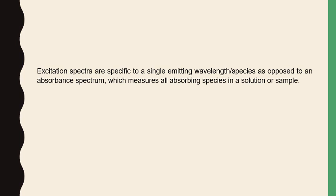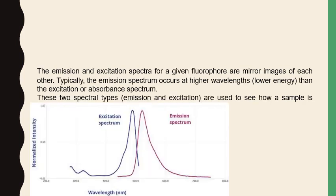There is one more difference between emission and absorption spectra. In excitation spectroscopy, the spectrum is specific to a single emission wavelength, as opposed to absorption spectroscopy in which all absorbing species in a solution or sample contribute. In absorption spectroscopy we have all wavelengths included. The emission and excitation spectra for a given fluorophore are mirror images of each other. Typically, the emission spectrum occurs at a higher wavelength than the excitation or absorption spectrum, and these two spectral lines are used to see how a sample is changing.